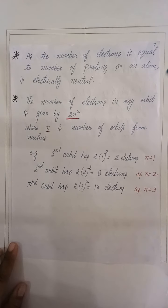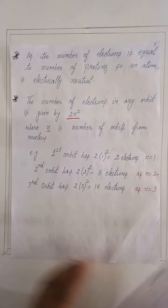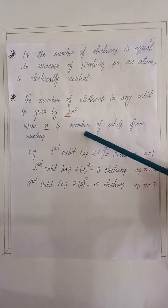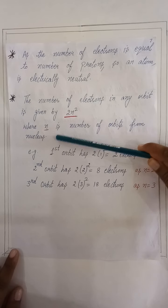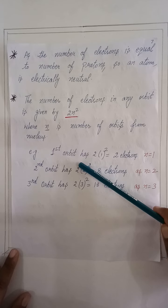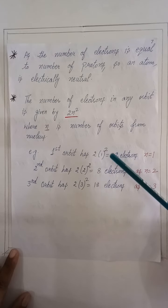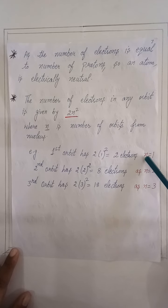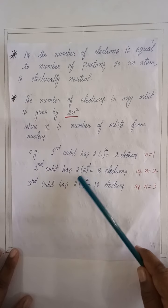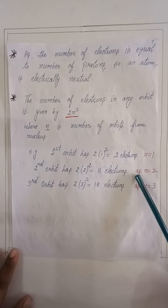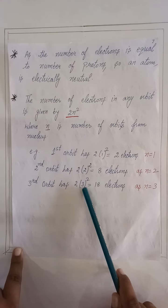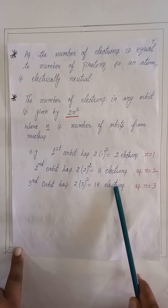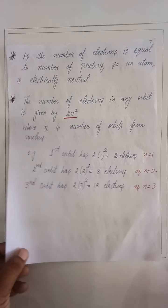The number of electrons in any orbit is given by 2n², where n is the number of the orbit from the nucleus. For example, the first orbit has 2×1² = 2 electrons (n=1). The second orbit has 2×2² = 8 electrons (n=2). The third orbit has 2×3² = 18 electrons (n=3).